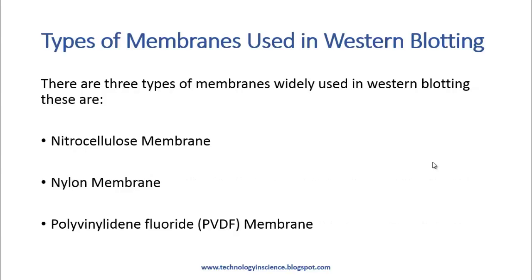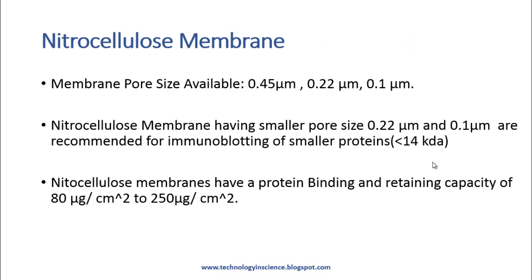These are the types of membranes used in Western blotting. There are three types of membranes widely used: nitrocellulose membranes, nylon membranes, and polyvinylidene fluoride membranes, or PVDF membranes. Let's look into the details of each of these.